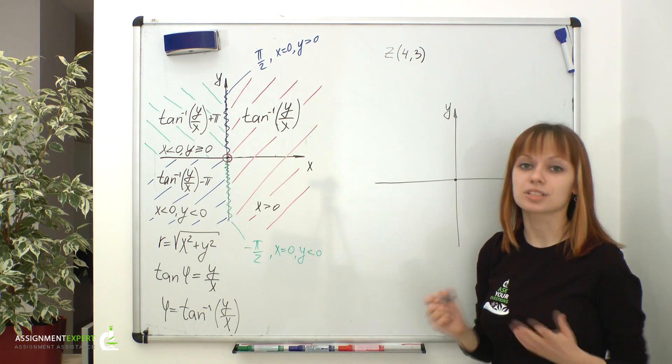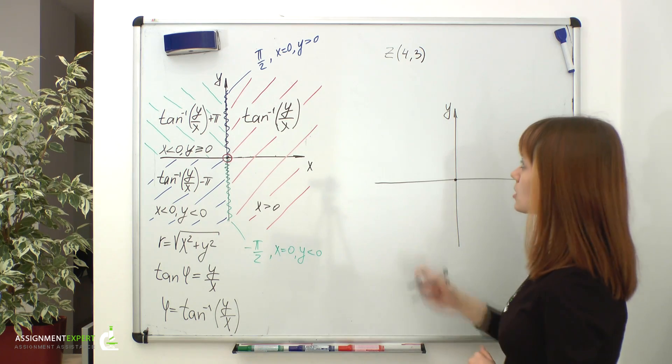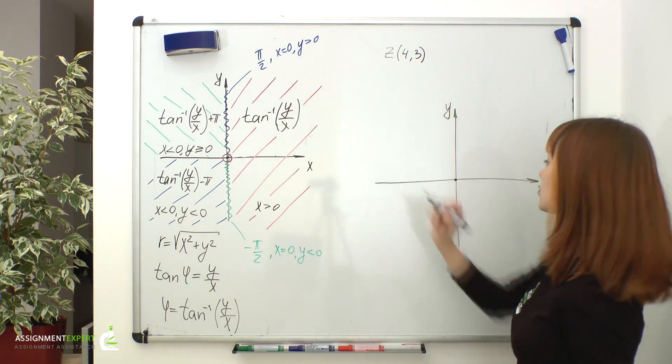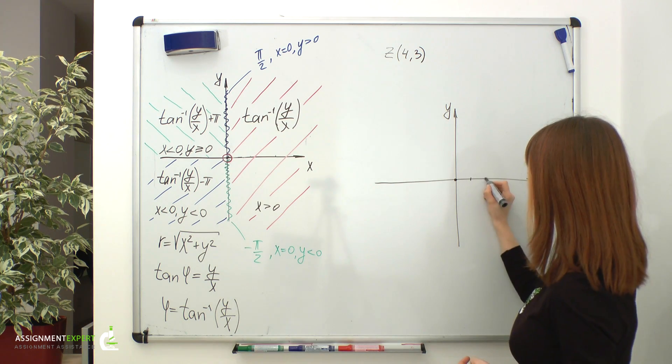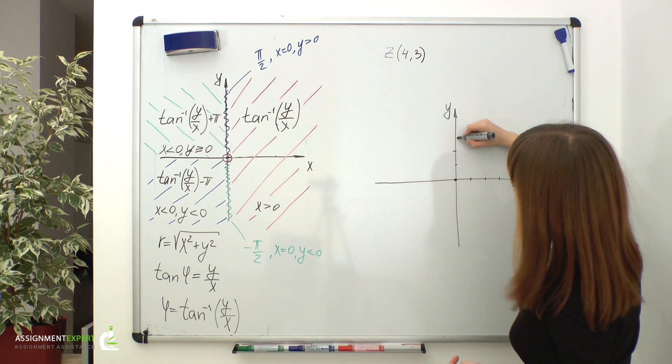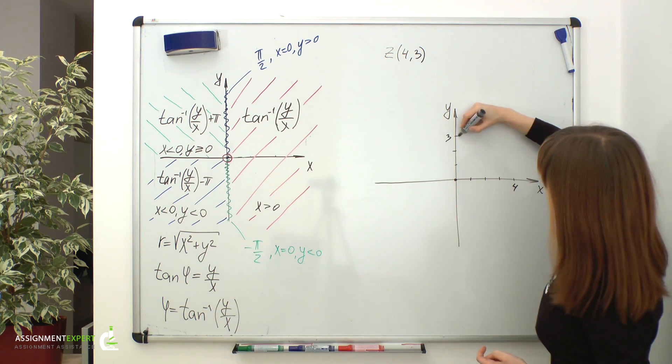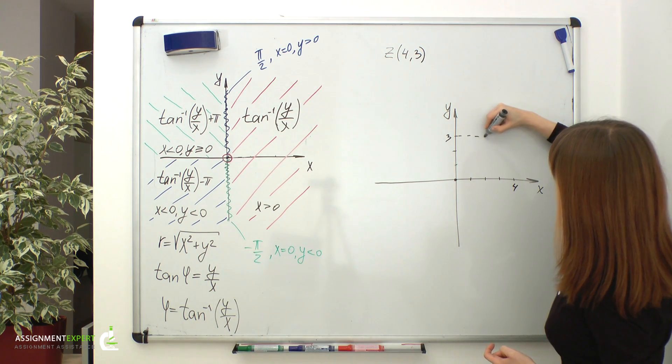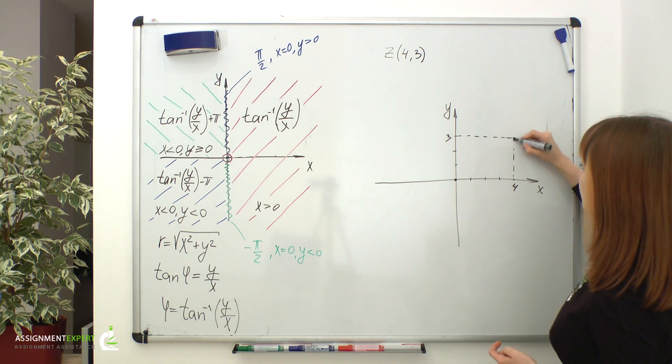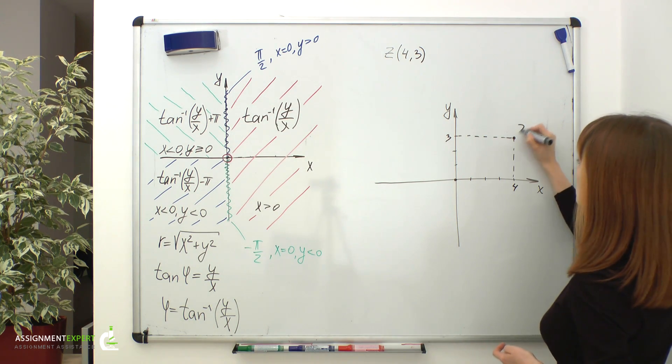Suppose 4 and 3 are rectangular coordinates. It means that 4 is the real part of z and 3 is the imaginary part of z, and therefore z is found right here. Let's denote it as z rectangular.